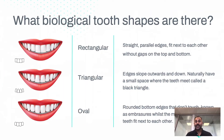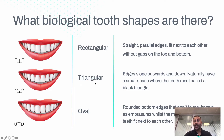Before we think about what has changed, let's think about the kinds of shapes we have. There are three types of natural tooth shapes: rectangular, triangular, or oval. Rectangular teeth have straight parallel edges — they're straight, they touch each other fully, and they fit next to each other with no gaps at the bottom.